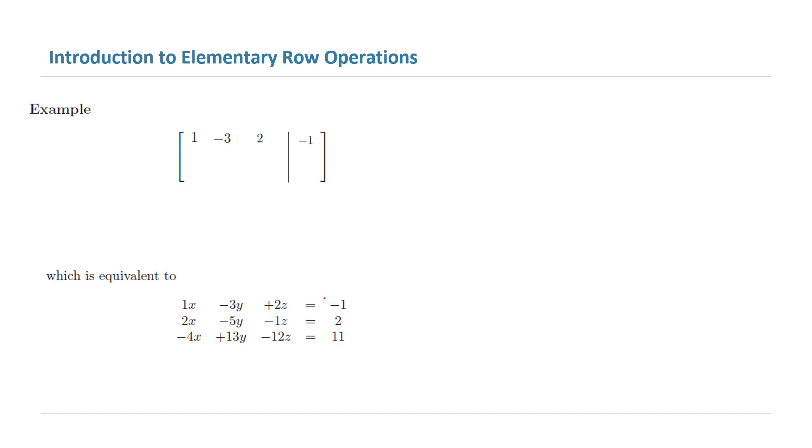So it's going to be the last entry on the first row. Now we move on to the second equation: 2, negative 5, negative 1 as coefficients. We'll list them there. And 2 is the constant term, which is going to land here.